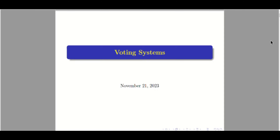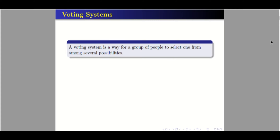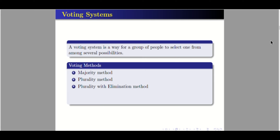Good day. We'll discuss voting systems. A voting system is a way for a group of people to select one from among several possibilities. In this video, we will discuss five voting methods: the majority method, the plurality method, the plurality method with elimination, the Borda count method, and the pairwise comparison or head-to-head method.